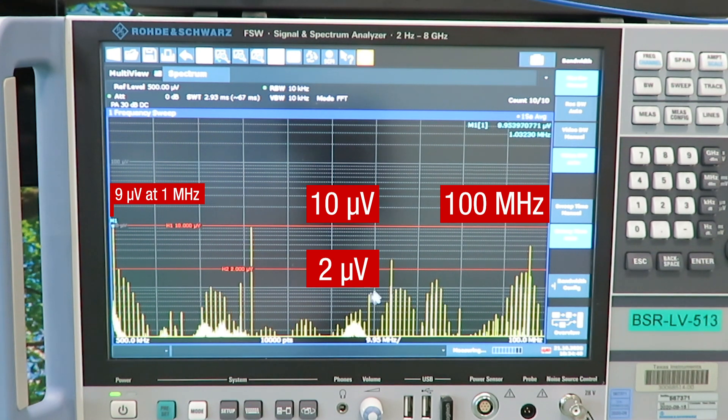You can also see the high frequency noise is very well attenuated below 2 µV RMS. The frequency spurs we are seeing here are actually caused by external emissions and not by the DC-DC converter itself.